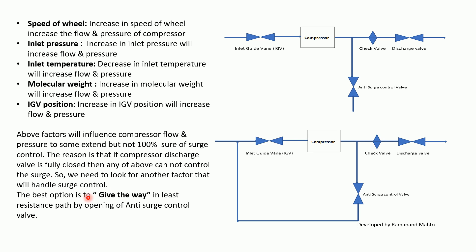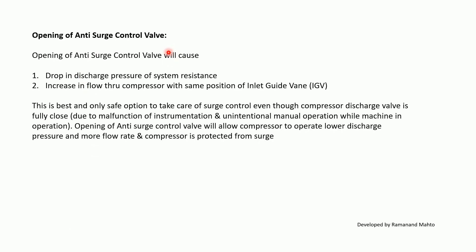The best option is to provide the least resistant path by opening the anti-surge control valve. Opening the anti-surge control valve allows more flow through the compressor and reduces discharge pressure. Opening the anti-surge control valve causes a drop in discharge pressure, increasing the flow through the compressor with the same IGV position. This is the best and only safe option to handle surge control, even when the compressor discharge valve is fully closed — whether closed due to instrumentation malfunction or unintentional manual closure. Opening the anti-surge control valve allows the compressor to operate at lower discharge pressure and higher flow rate, protecting it from surge.